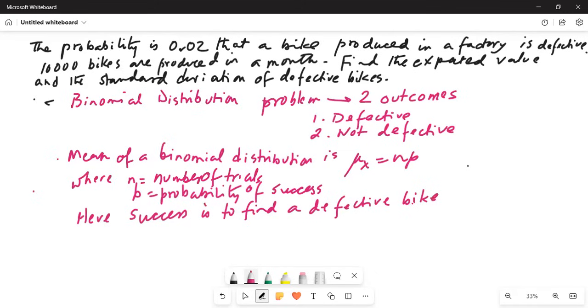So, don't leave right away because I will give you a hint or an easy way to do this problem at the end. My n is number of trials is equal to 10,000. And my probability of success, small p, is 0.02. That is probability of finding a defective bike.